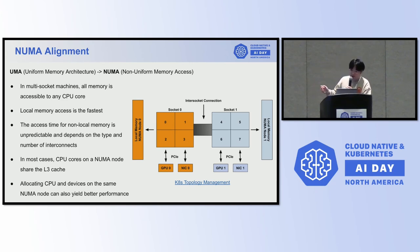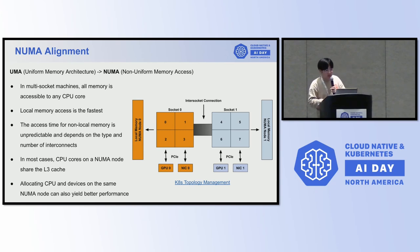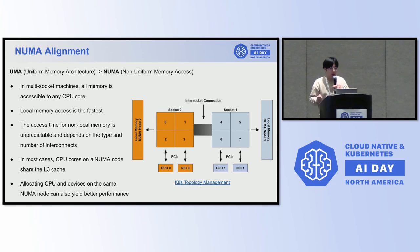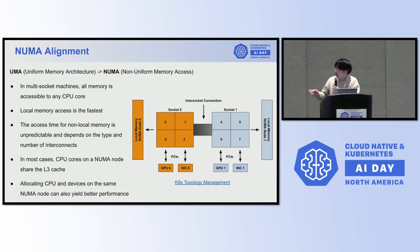In this picture, we can see that the machine has two NUMA nodes. While all memory is accessible to any CPU core, local memory access is the fastest. The access time for non-local memory is unpredictable and depends on the types and numbers of the interconnections. In most cases, CPU cores on a NUMA node will share the L3 cache. If the cores of a process are spread across different NUMA nodes, it can lead to higher L3 cache misses. In AI scenarios, co-locating CPU cores and devices on the same NUMA nodes can also yield better performance.